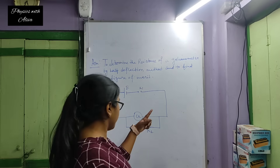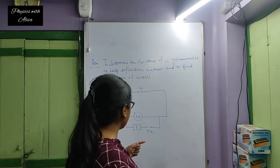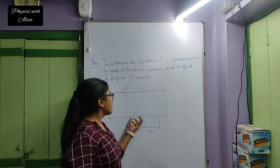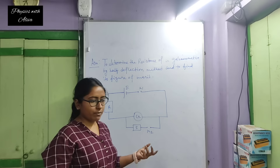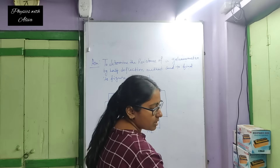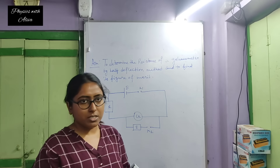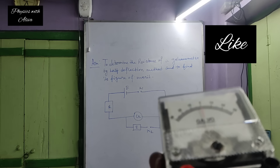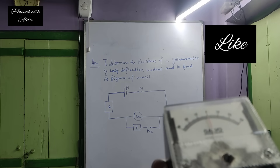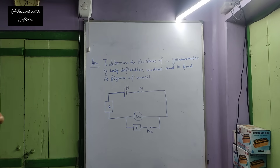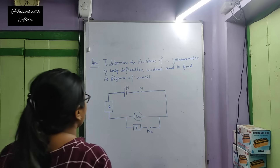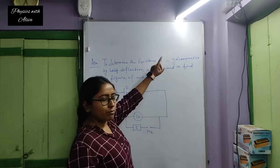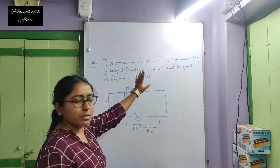This is the circuit of the practical. The main aim is to calculate the resistance of the galvanometer. This is our galvanometer and we have to calculate the resistance of this galvanometer by half deflection method. And what is the half deflection method? In the process of the experiment you will understand this.